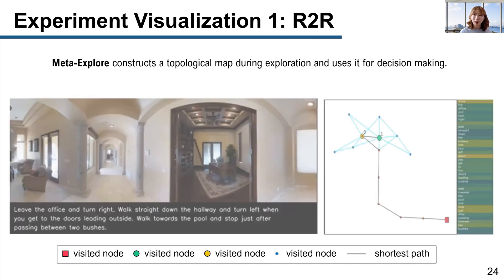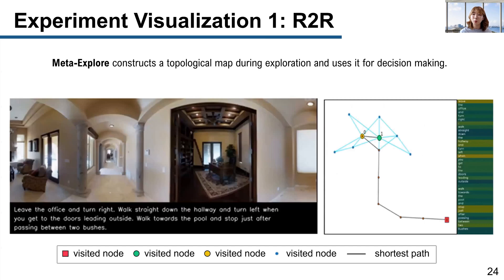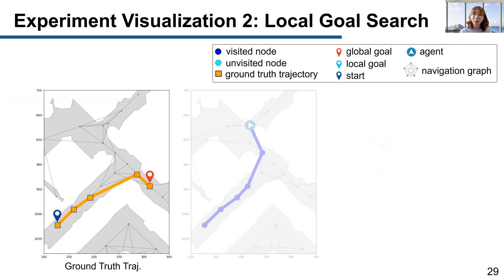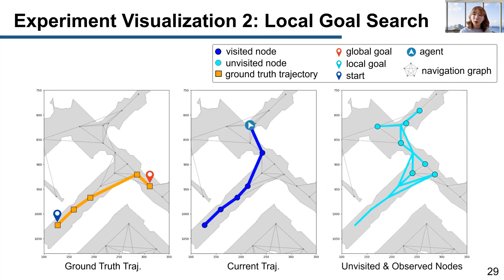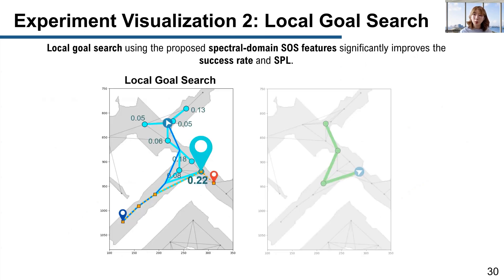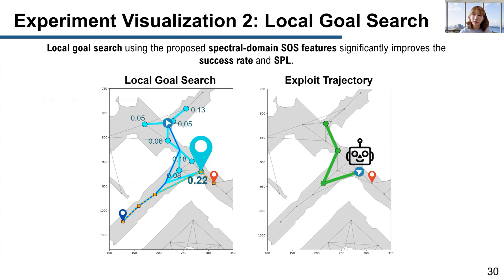This image shows how the agent constructs the topological map during exploration. As the agent explores, the topological map is constructed progressively. This is a sample case of exploitation when the agent turned left while the goal was to the right. When we measured the navigation score for each local goal candidate, the scores ranged from 0.05 to 0.22. The agent chose the node with the highest navigation score as the local goal and moved toward that node. In this scenario, we were able to find that the agent gets closer to the global goal even during exploitation.